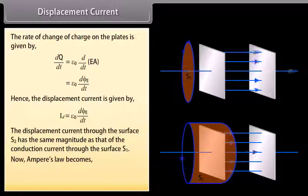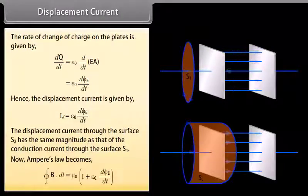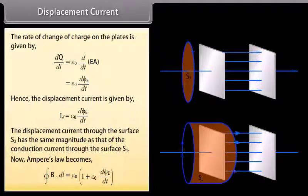Now Ampere's law becomes: closed integral of B dot DL is equal to mu not multiplied by I plus epsilon not D phi E by DT.